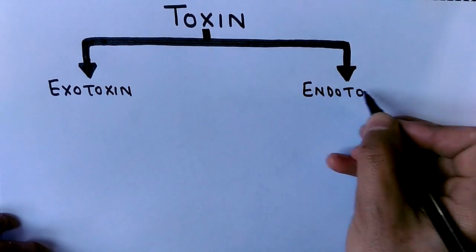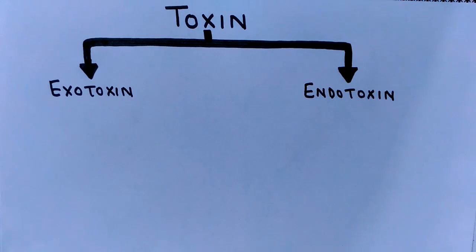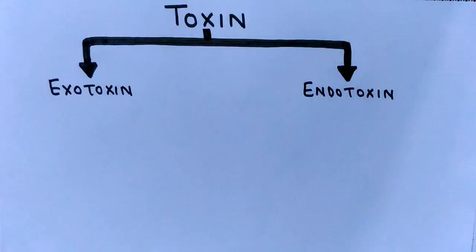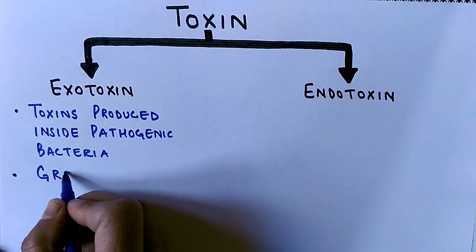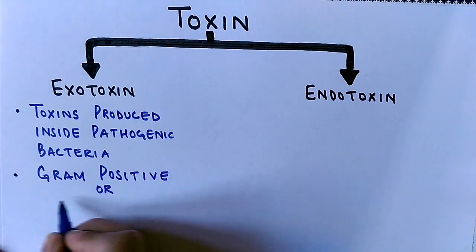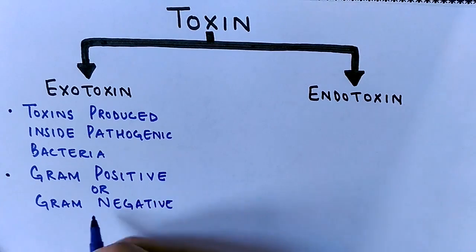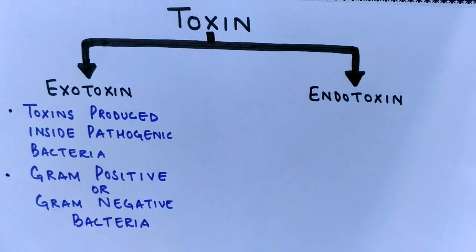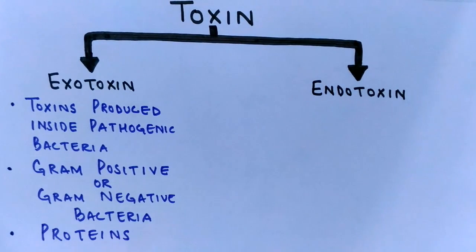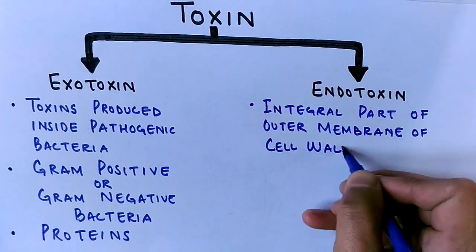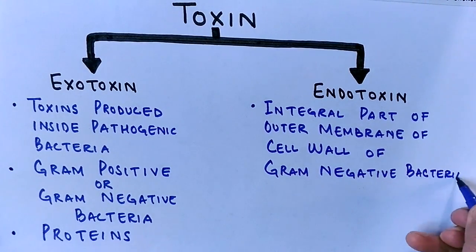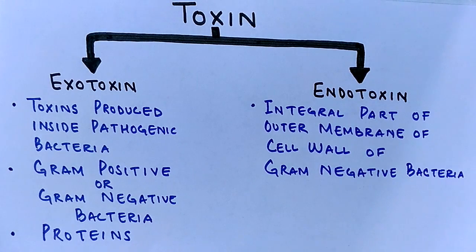We classify toxins into two categories: exotoxins and endotoxins. Exotoxins are produced inside bacteria — either gram-positive or gram-negative bacteria — but exotoxins are produced mostly by gram-positive bacteria, and these are mostly proteins. On the other side, endotoxins are not produced in the same way; rather, endotoxins are themselves a part of the cell wall of gram-negative bacteria, being exclusively present in gram-negative bacteria.